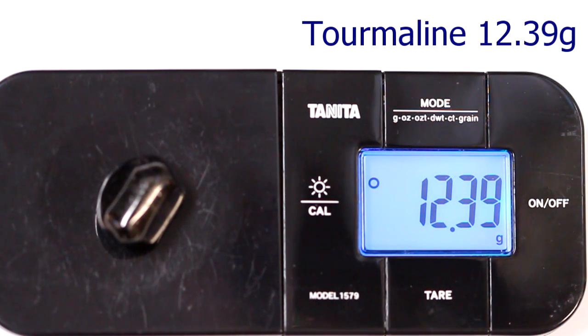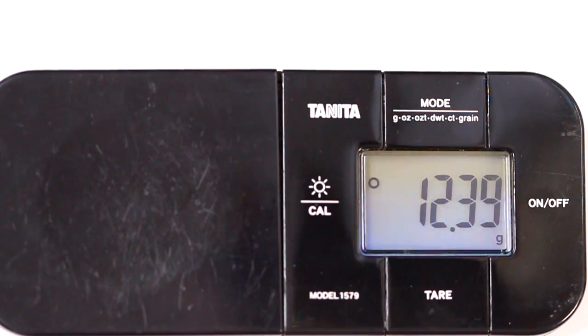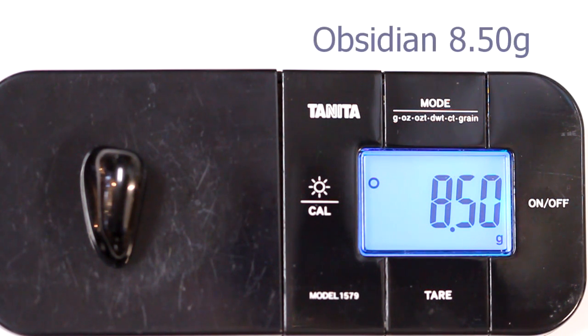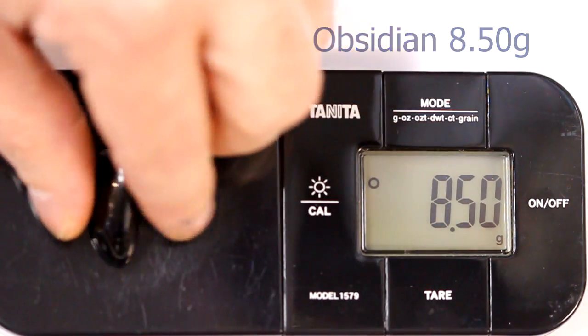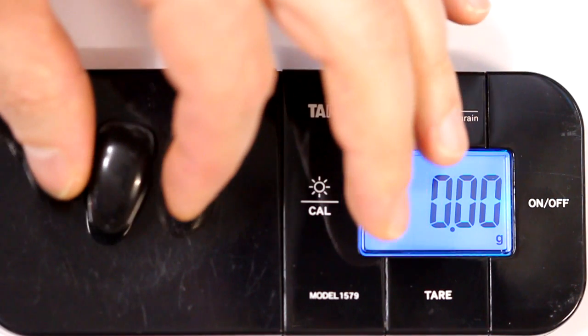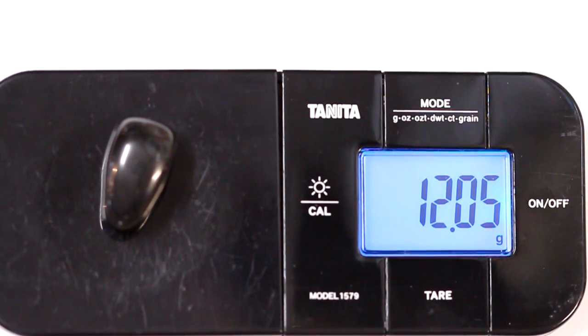So all we need is a set of scales that are accurate to at least two decimal points. They also need enough capacity to weigh a cup of water. These scales here will measure up to 200 grams, which is enough for me to zero in a cup of water with some room left over for the test. First, we take a piece of paper and we write down the weight of the stones first.